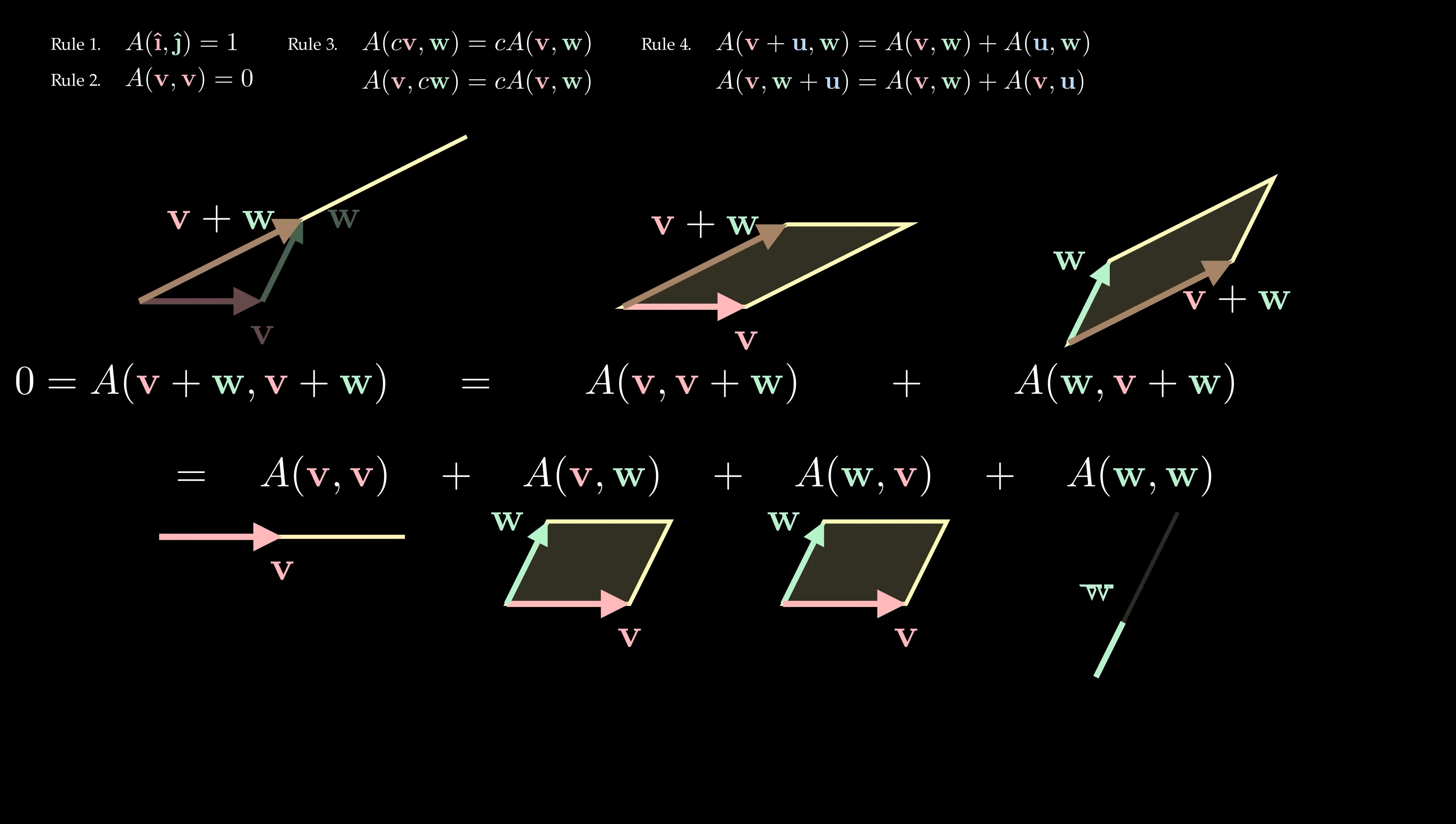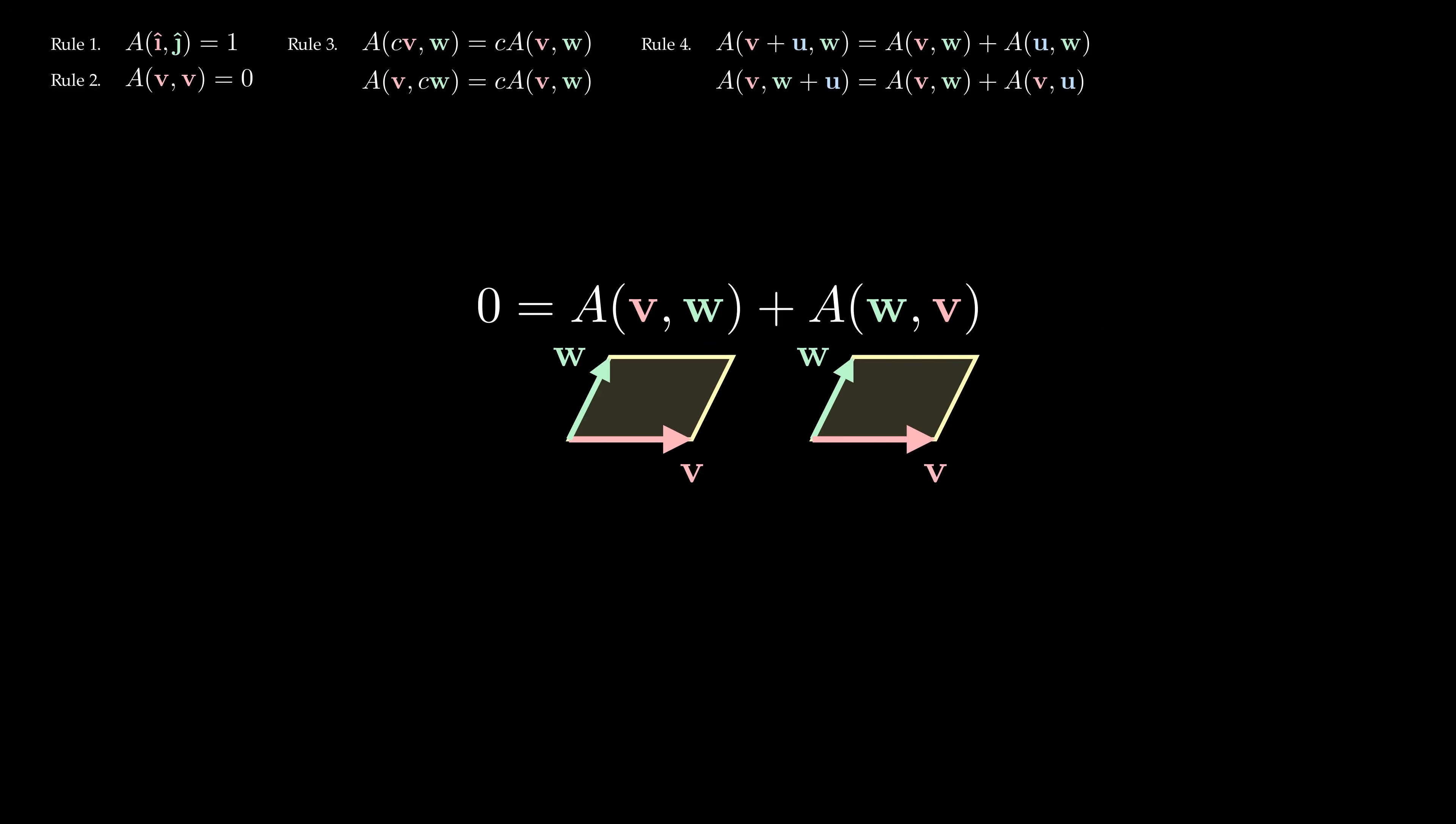But two of them are just lines, which have zero area by rule 2. Since this whole thing is equal to zero, we come to the curious conclusion that swapping the two vectors v and w in the area function introduces a minus sign.